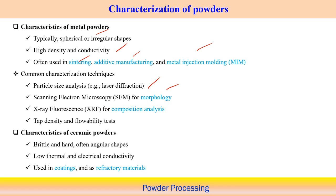Characteristics of ceramic powders: typically very brittle, very hard, and often angular shapes — it is very difficult to find ceramic powder in spherical shape. Ceramics have low thermal and electrical conductivity, which is true for ceramic powders as well. Ceramic powders are mostly used for coatings and as refractory materials in various applications.